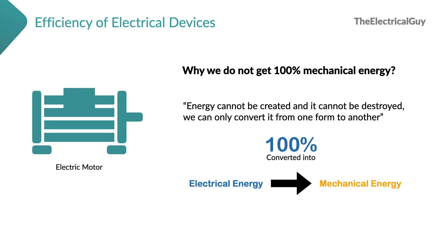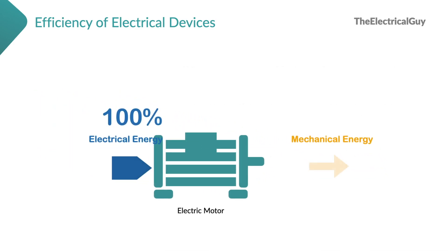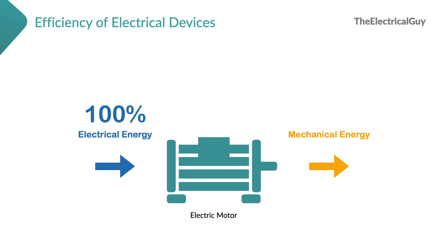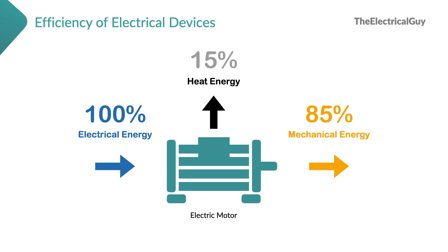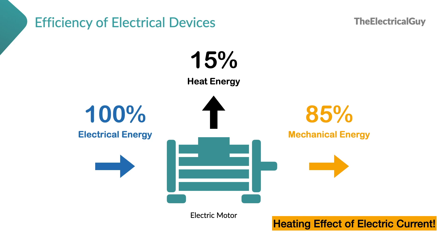But this is the ideal case and not possible practically. When we give electrical energy as input, the input energy not only gets converted into mechanical energy but also into some other form of energy. The most common other form is heat energy, and of course this heat energy is not useful. So in the example shown, if we are giving 100% electrical energy as input, only 85% of input energy is getting converted into mechanical energy and the balance 15% is converted as heat.